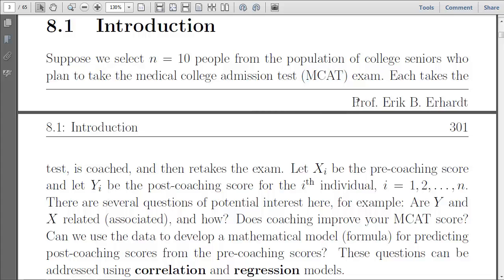And each will take the test, and then will be coached, and then take the exam again. So this is, as in data from Chapter 3 on the two-sample t-test, this is paired data. And we're going to treat x as the pre-coaching score, and then let y be the post-coaching score. And we're hoping that there'll be an increase over time.